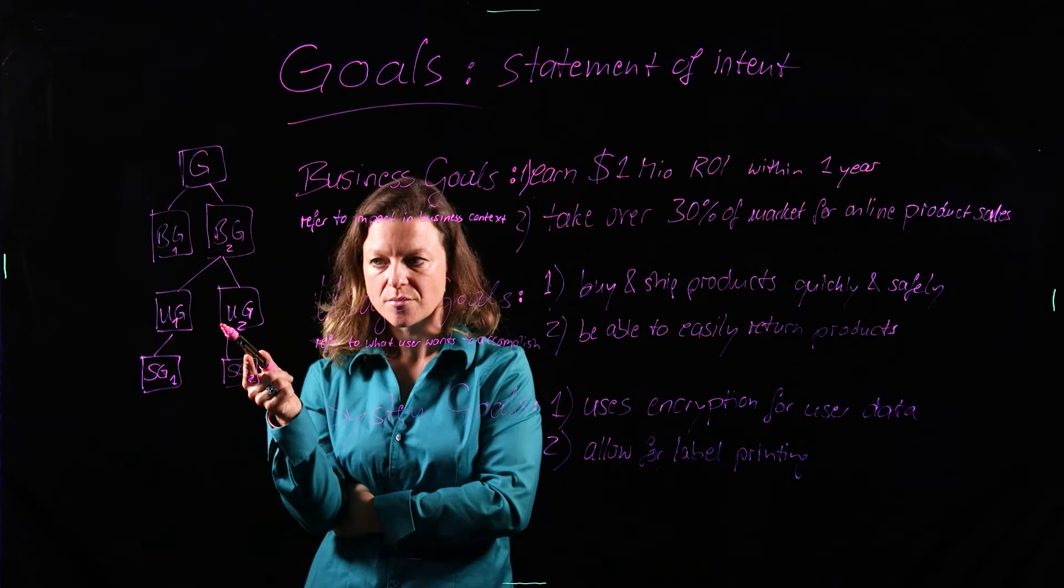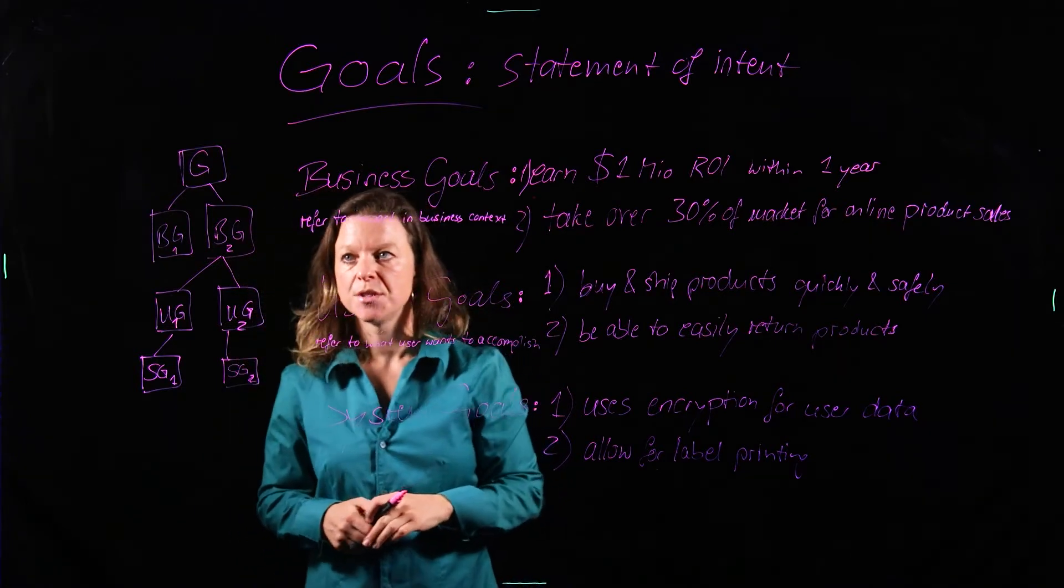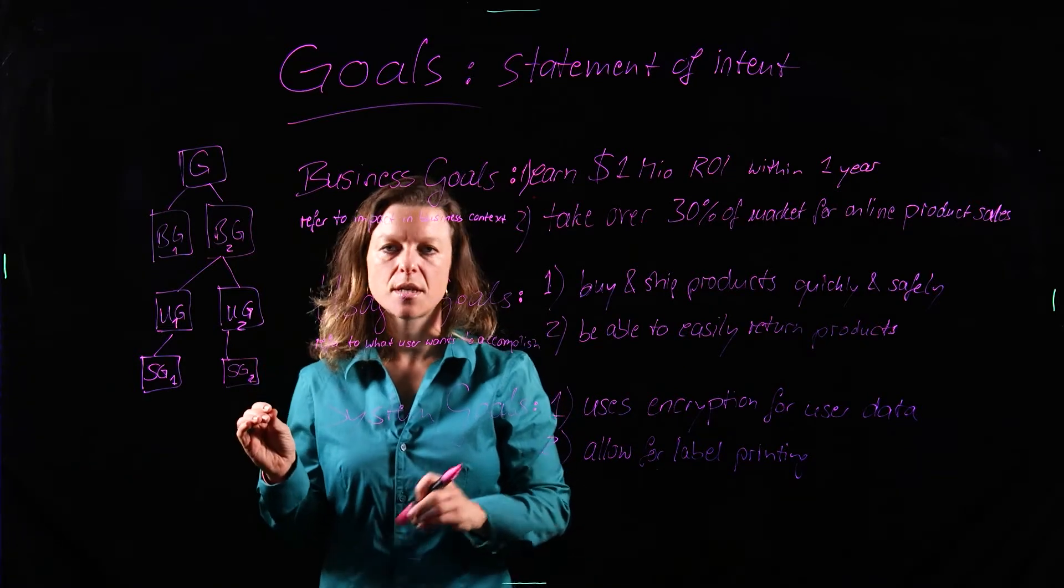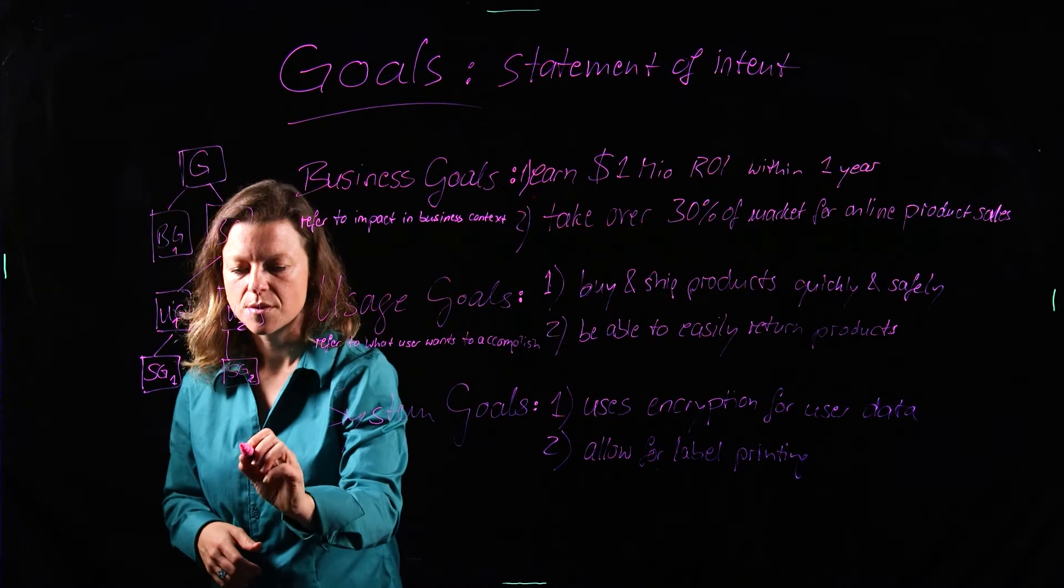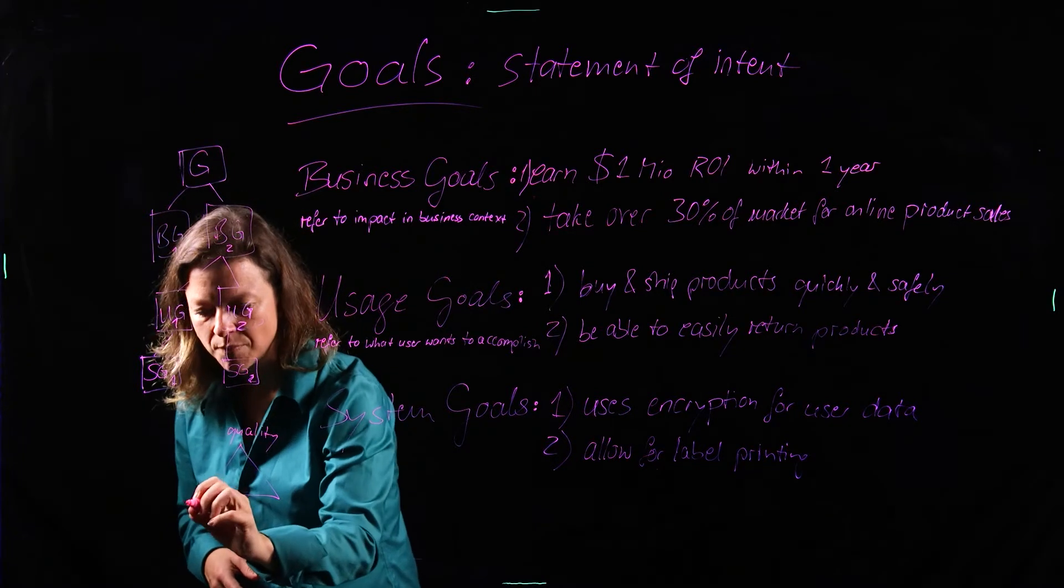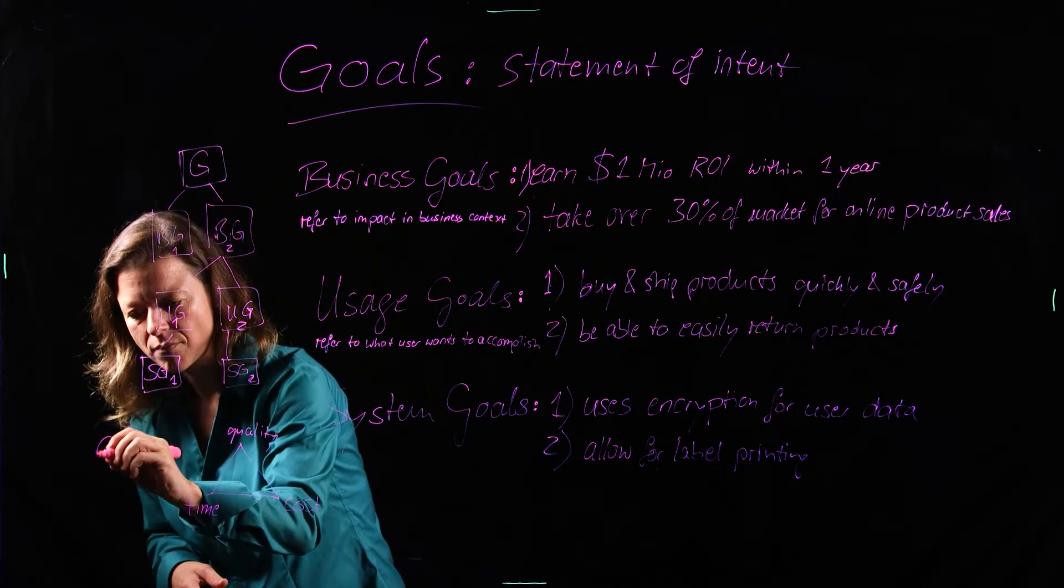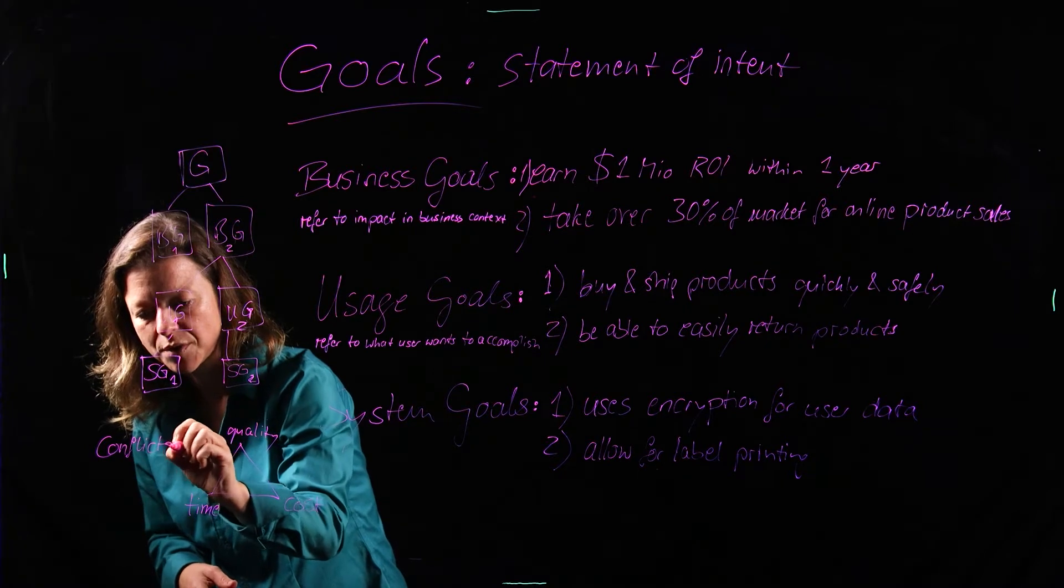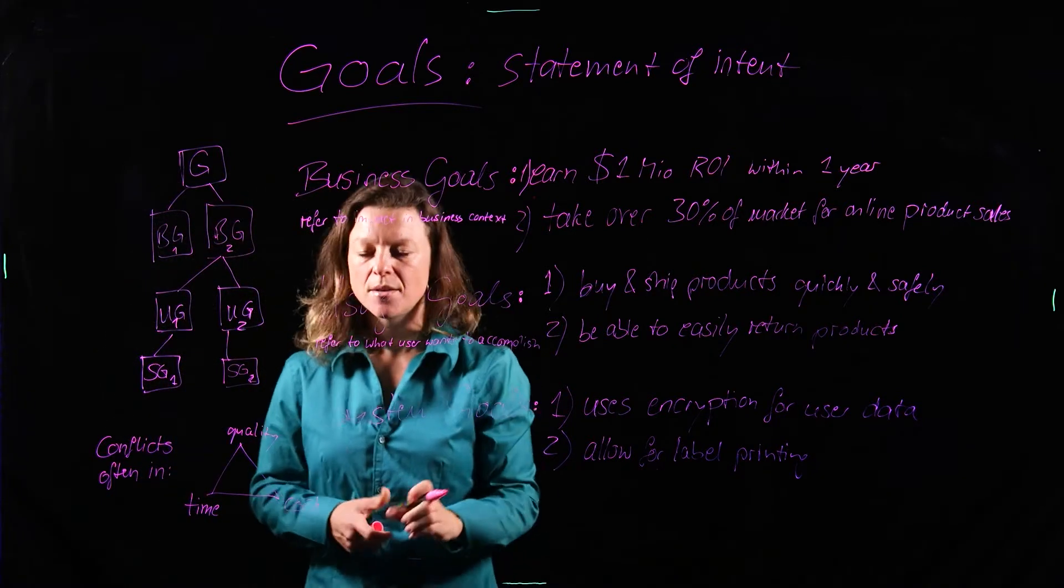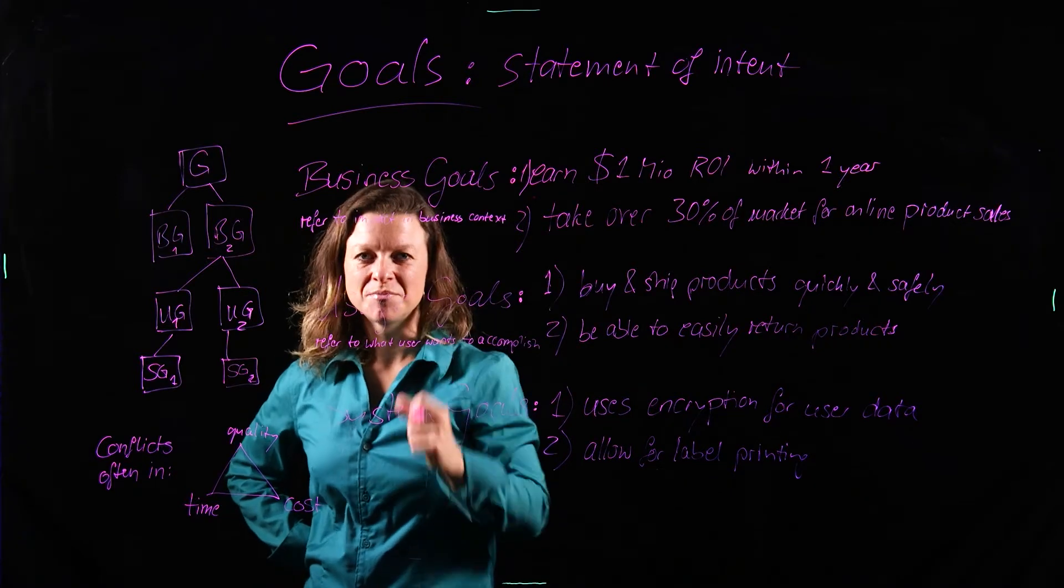The other part why you want to analyze those goals is you want to find out whether there are any conflicts. And a very typical conflict that you may be able to detect in many goal models is the conflict between time and quality. So you know there is this development triangle of time, cost and quality. And conflicts are often due to that one. Now, the cynical business consultant says, time, quality, cost, pick two. You can only have two.